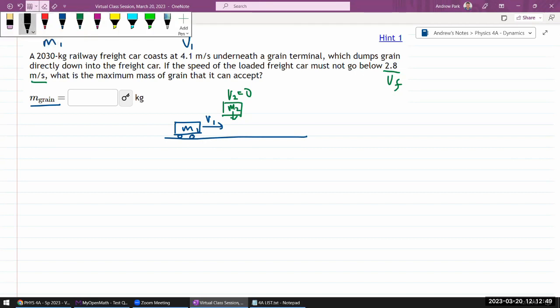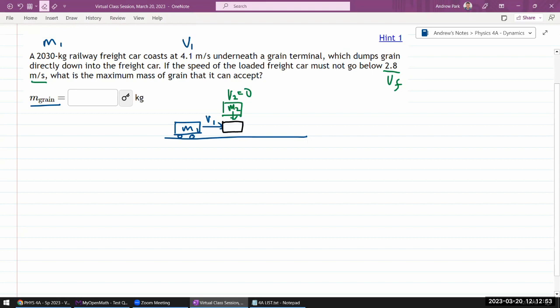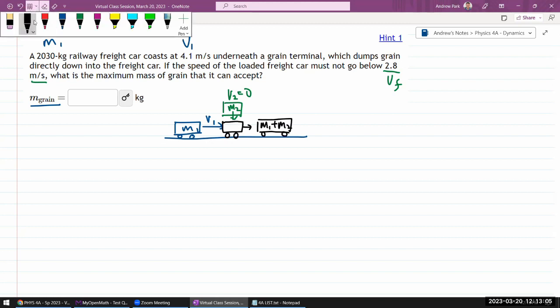What is the maximum mass of grain that it can accept? Okay, yeah. So the picture we have is after grain has been dumped onto the cart that's moving below. And then now we have this combined mass of the thing, which is going to be M1 plus M2. And let's just put in the condition that they're asking for.